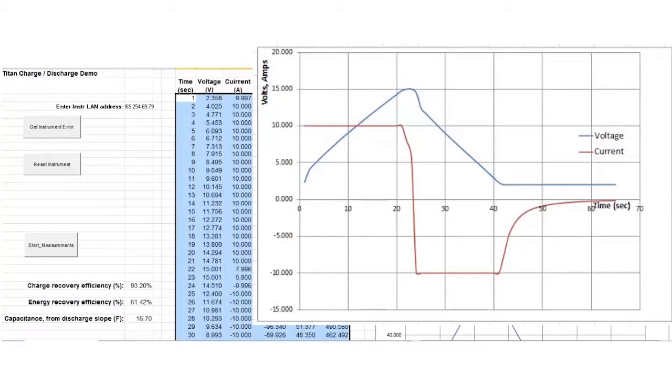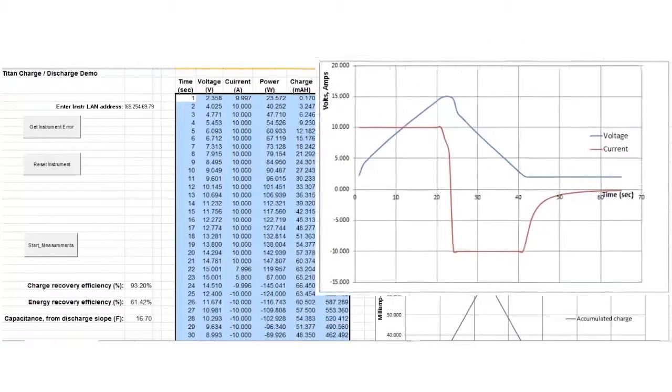What I want you to pay particularly close attention to is that when the amps cross over from positive to negative amps, there's no glitch in the measurement data. The volts and amps make a smooth transition.